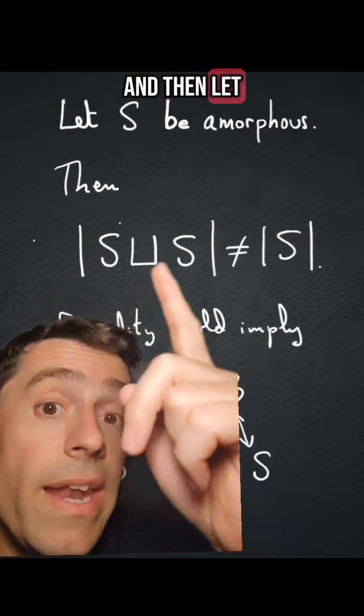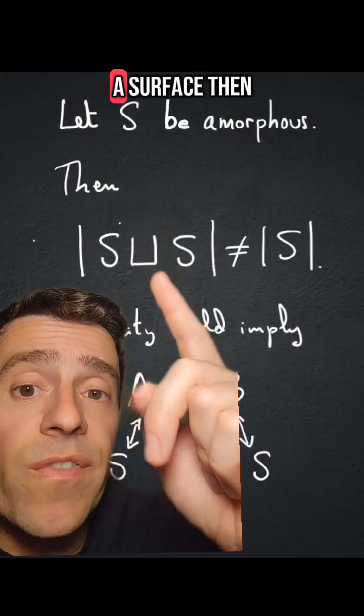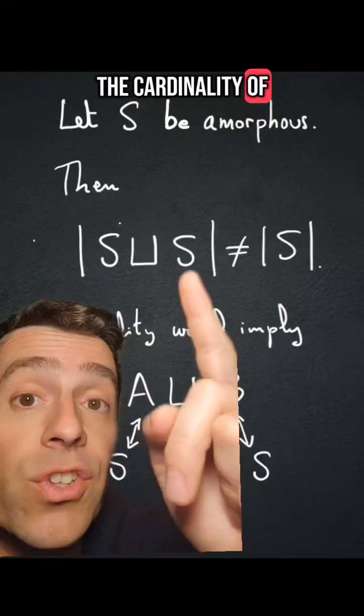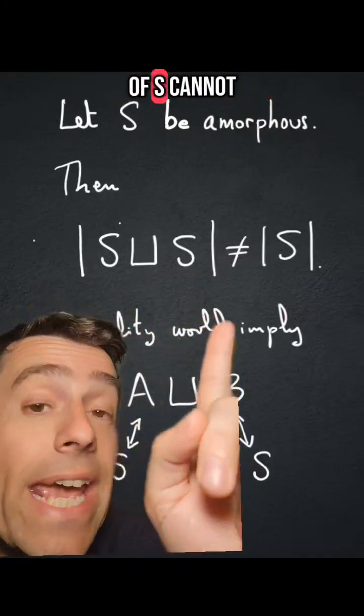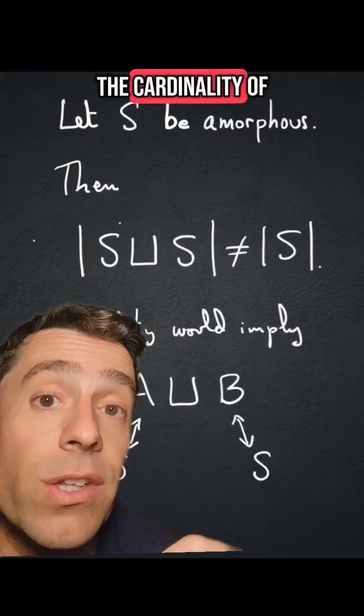And then let S be an amorphous set. If S is amorphous, then the cardinality of the disjoint union of two copies of S cannot be equal to the cardinality of S.